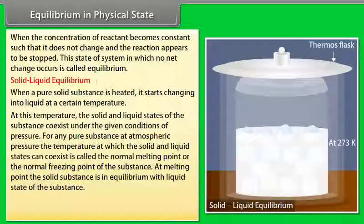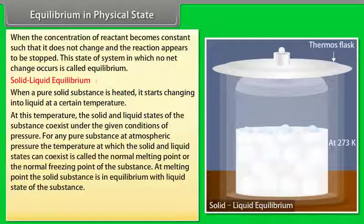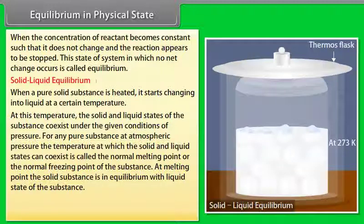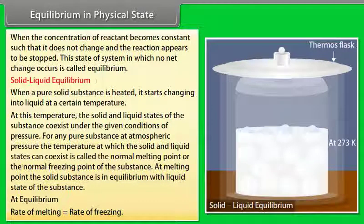At the melting point, the solid substance is in equilibrium with the liquid state. Let us consider ice and water at 273 Kelvin — the melting point of ice — taken in a perfectly insulated thermos flask. The temperature as well as the masses of ice and water remains constant. This represents a dynamic equilibrium between ice and water. The number of molecules going from ice into water is equal to the number of molecules going from water into ice. Thus, at equilibrium, rate of melting is equal to rate of freezing.